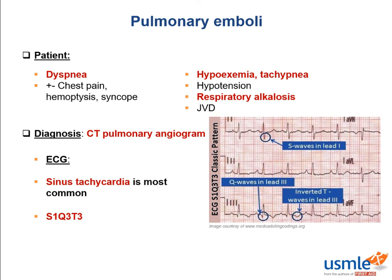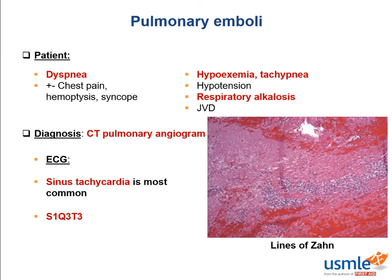On autopsy, after death blood stops flowing — stasis — so blood pooling in the pulmonary arteries will clot. To tell whether a thrombus formed before or after death, we look for the lines of Zahn. These lines are made of interdigitating platelets and fibrin, which appear pink, and RBCs which appear red. These lines only form in living patients, so if they are present, we know the patient died from a PE.